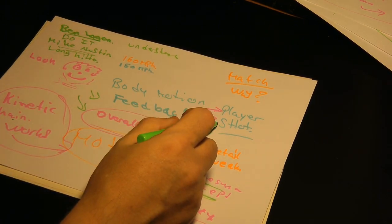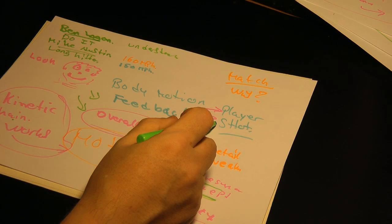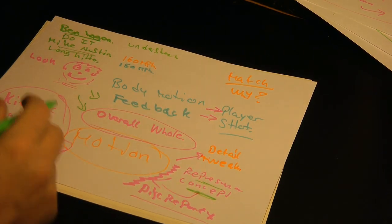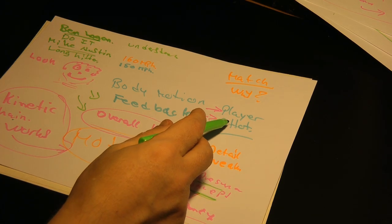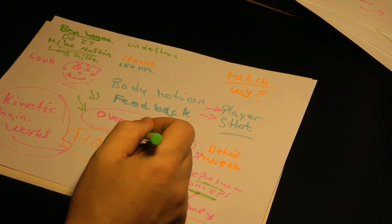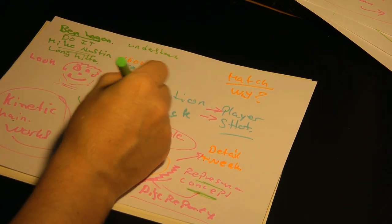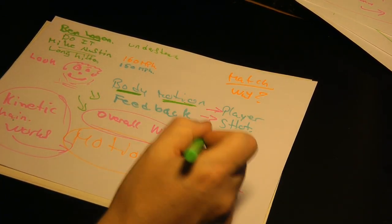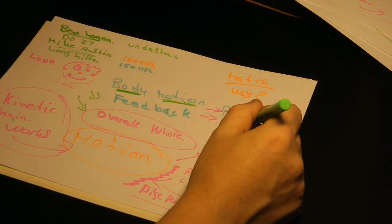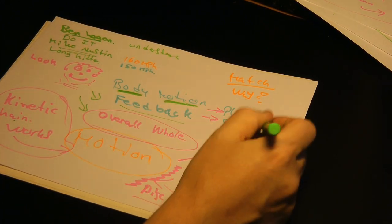When a player wants to learn a new swing, I'm asking them for the feedback they have when they hit the shot. I'm not the one who's an expert here, the player is. The player will teach themselves, or as I like to say, the body action or motion will teach the player with feedback.